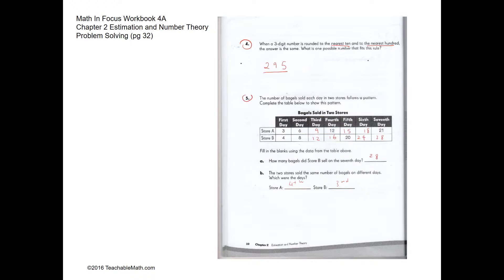Question 5. How many bagels did store B sell on the 7th day? Before we get to this answer, we have to first fill in the boxes. For store A, there's a pattern to it and they are all multiples of 3. For store B, they are all multiples of 4. For question part A, how many bagels did store B sell on the 7th day? On the 7th day for store B, it has to be 28.